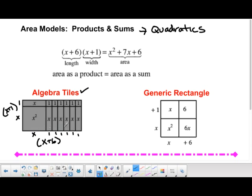So as you know from area, a length times width is our area. So that's why we can say, hey, area as a product would be our length times our width. And our area as a sum, where we're just adding all these things together, would be written like this. x squared plus seven, plus seven x plus six.